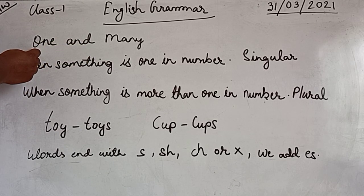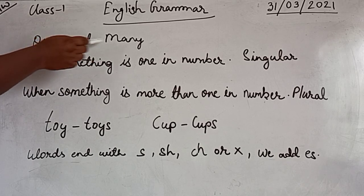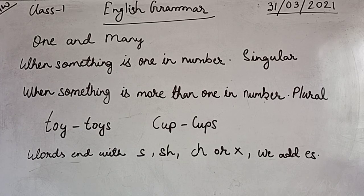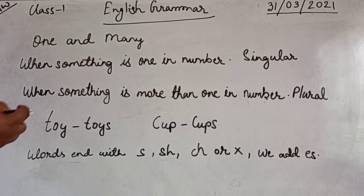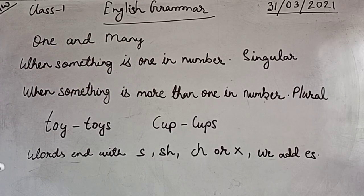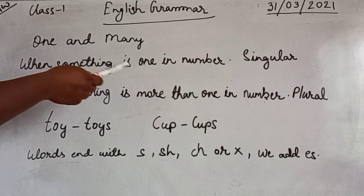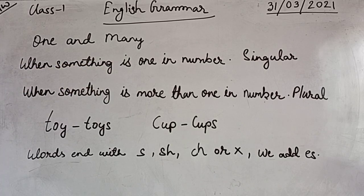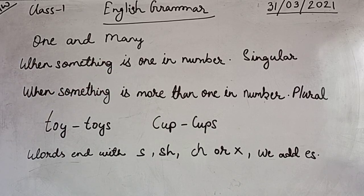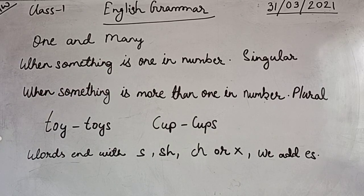Looking at these two words we can understand: one means when there is something that is only one in number, and many is when there are more than one. When something is one in number we call it singular. When something is more than one in number we call it plural.